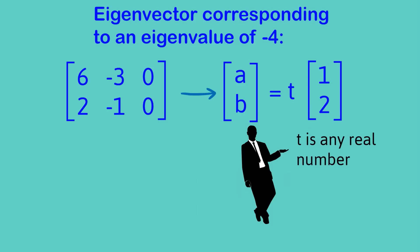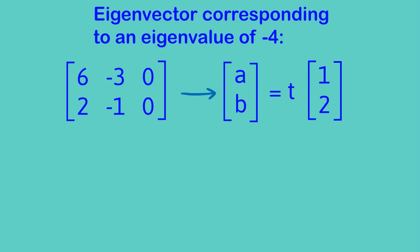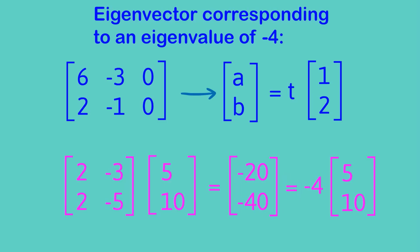Now to do the eigenvector corresponding to an eigenvalue of 1 we're just going to do exactly the same calculations but instead of using lambda equals negative 4 we'll just use 1. And here's just a quick check that in fact what we worked out for the eigenvalue of negative 4 is correct.